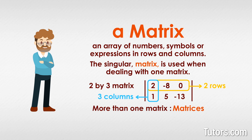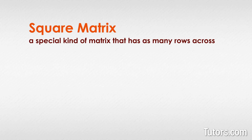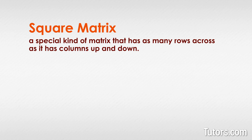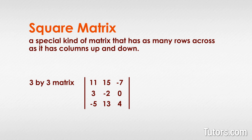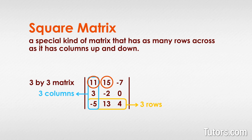When you have more than one matrix, you have matrices. A square matrix is a special kind of matrix that has as many rows across as it has columns up and down. Here is a square matrix — this matrix is three by three since it has three rows and three columns.